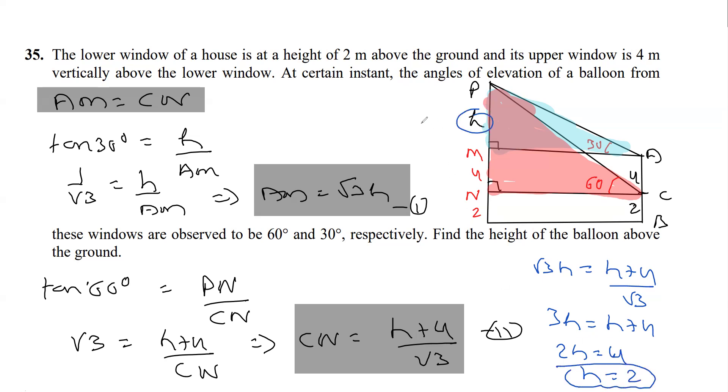Find the height of the balloon above the ground. So the height of the balloon above the ground is this distance, which is H plus 4 plus 2.